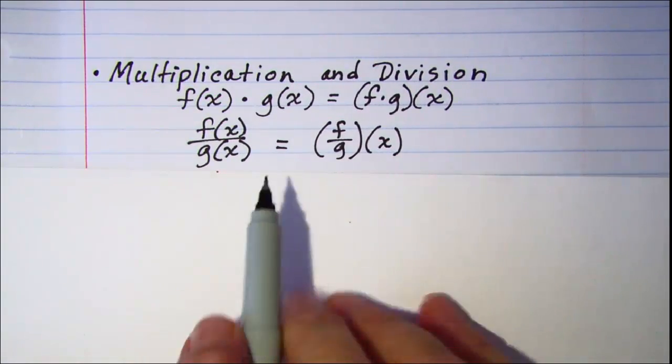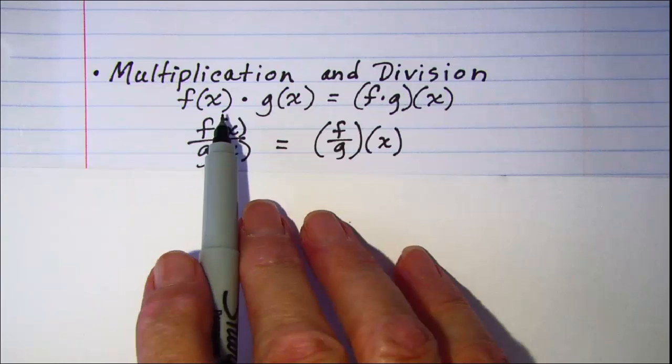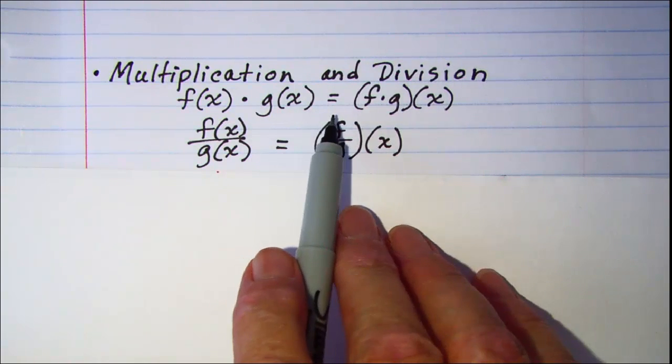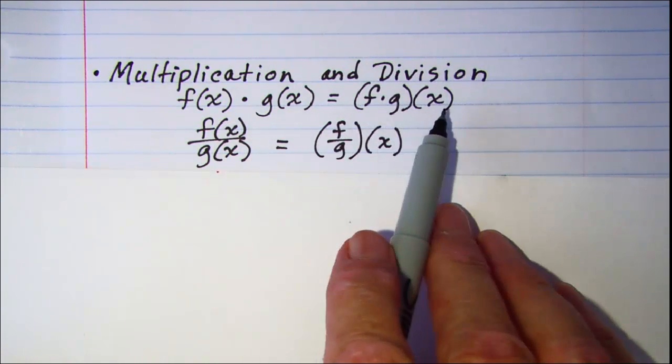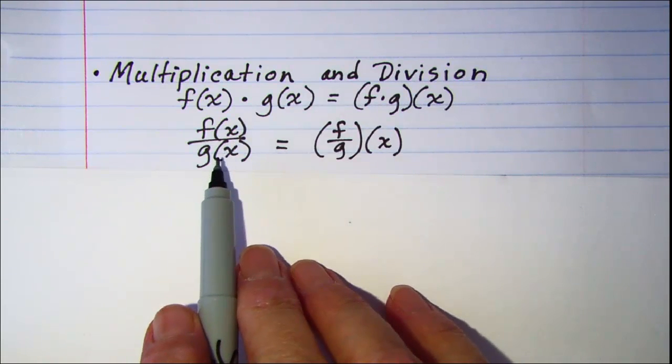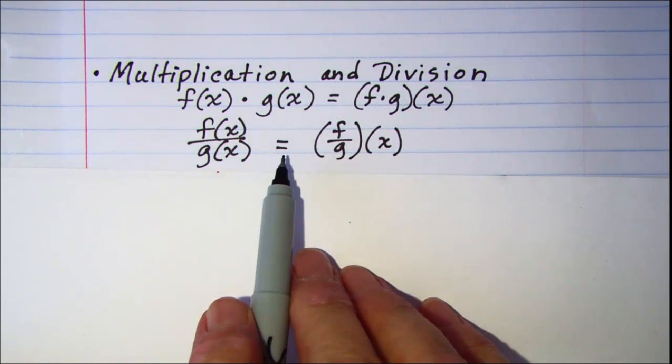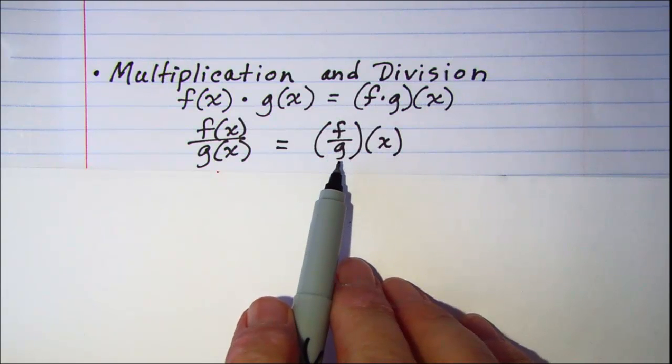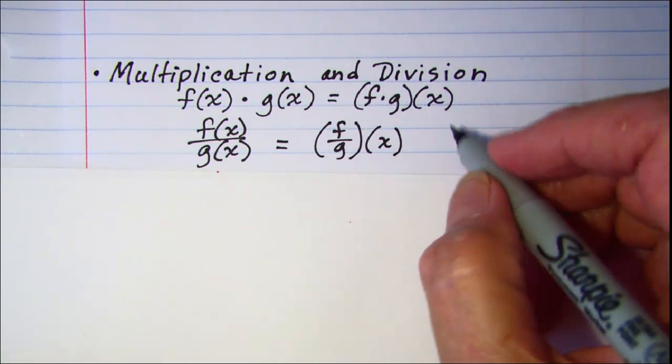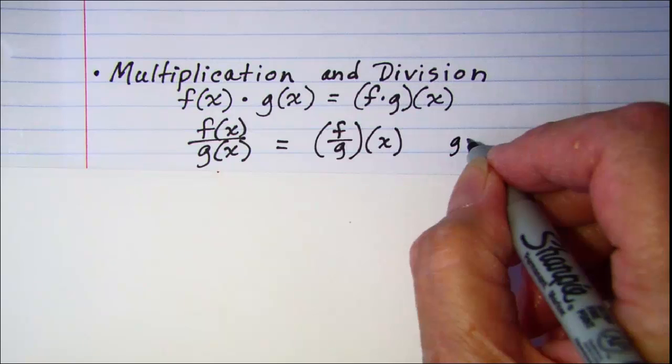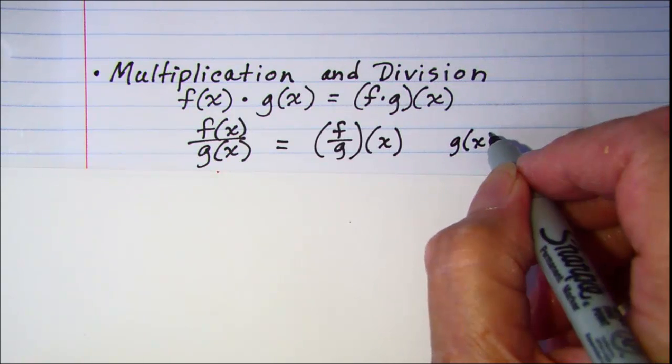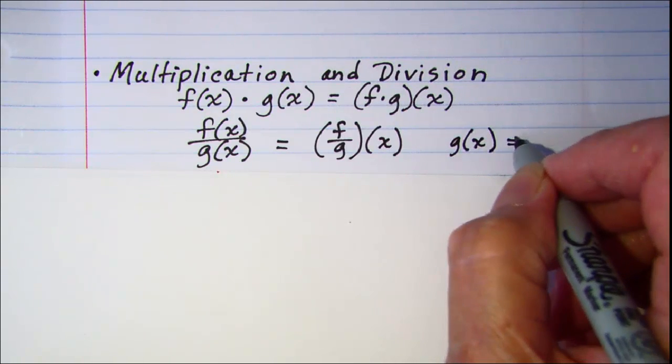For multiplication and division, f(x) · g(x) equals (f·g)(x). And f(x) ÷ g(x) equals (f/g)(x). Remember that our denominator cannot equal 0, so g(x) cannot equal 0.